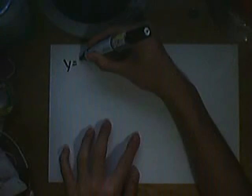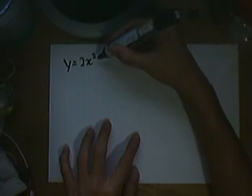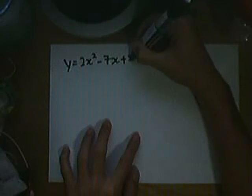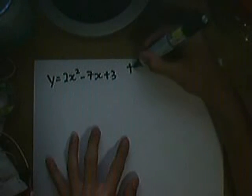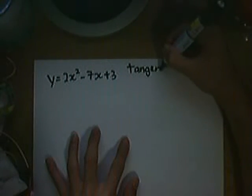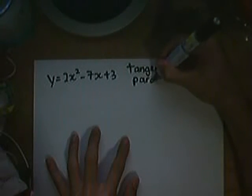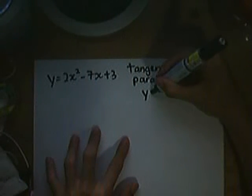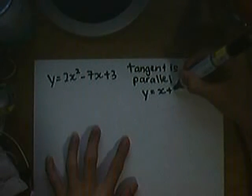Let's just say we have the curve y equals 2x to the power of 2 minus 7x plus 3. Let's just say the tangent to this curve is parallel to the line y equals x plus 2.